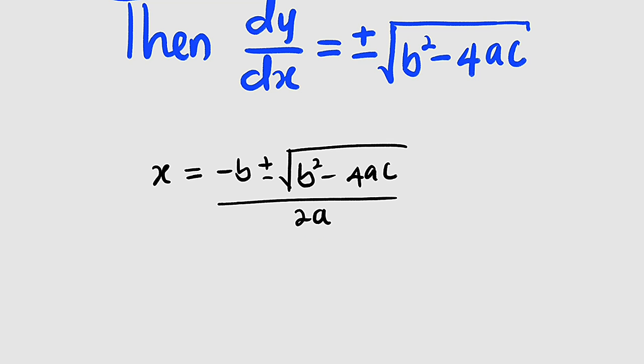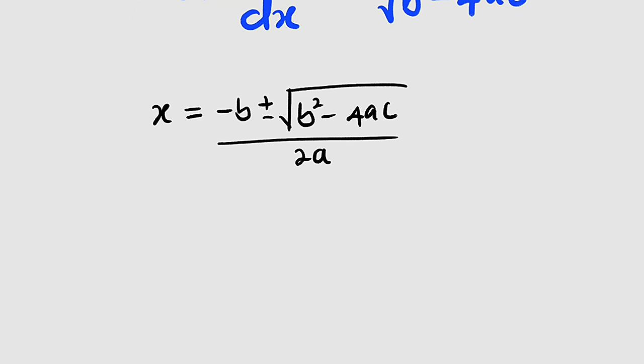So we have 2ax equal to -b plus or minus the square root of b² - 4ac. Then I can again take negative b to the left hand side.